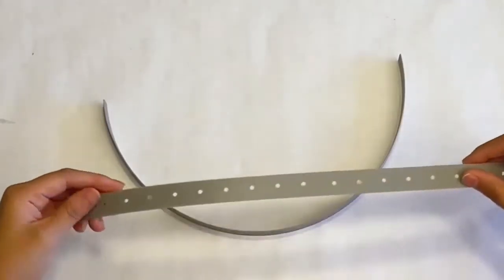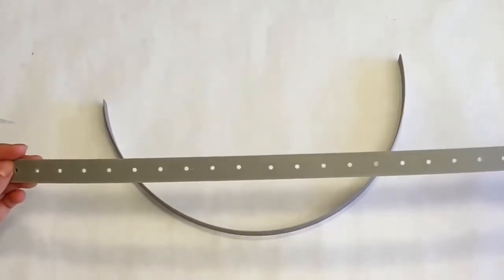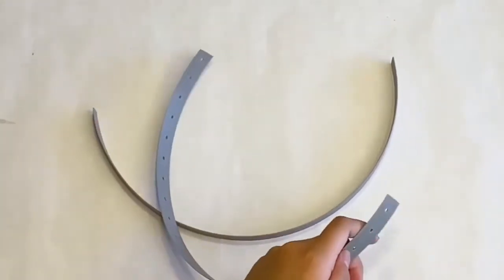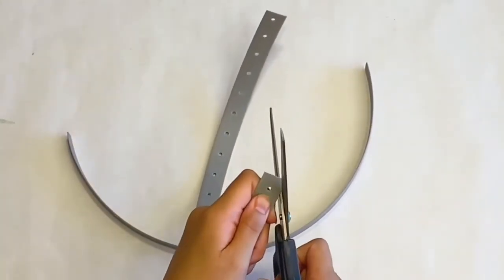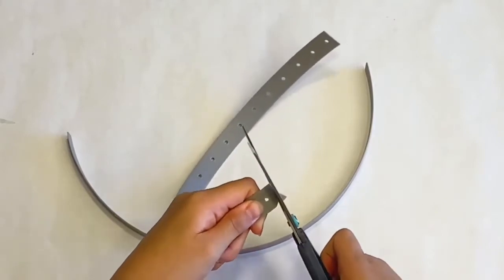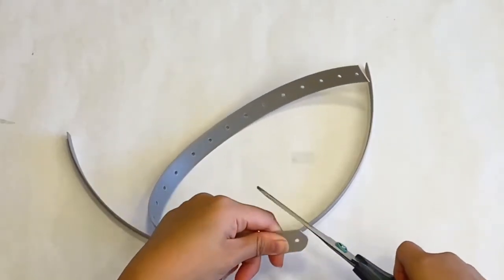We're going to start by cutting two straps, each with 22 holes in them in total. And we're going to take our scissors and just round out the edges so you do not harm the ear areas when you put them on.